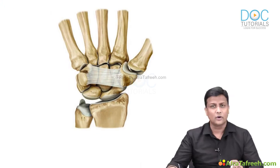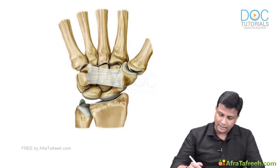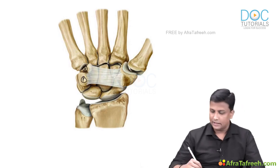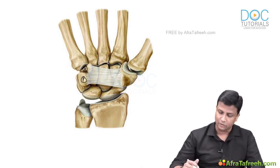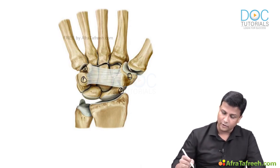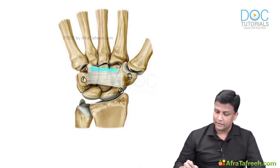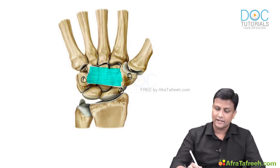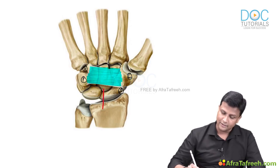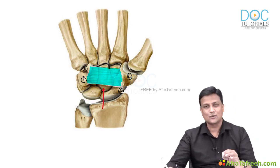Looking at the picture, on the medial side you have the hamate and pisiform, and on the lateral side you have trapezium and scaphoid. In between them is the flexor retinaculum. Because of this flexor retinaculum, it becomes a tunnel — and that tunnel is your carpal tunnel.